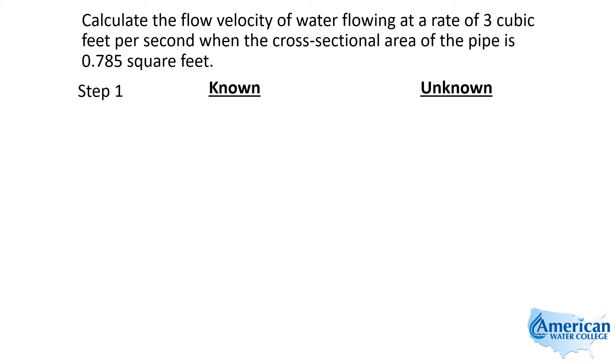Well, they were kind to us in this problem when they gave us the cross-sectional area, so we don't have to calculate it, but they want us to find the flow velocity in feet per second. Our flow is 3 cubic feet per second, and our cross-sectional area is 0.785 square feet.